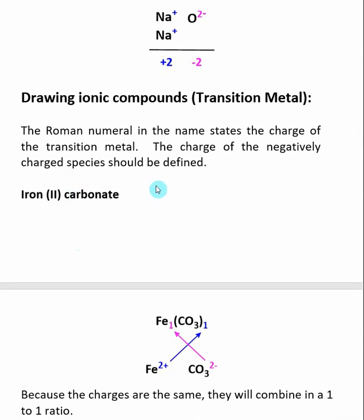If the first element named is a transition metal, I need to remember that the charge on the transition metal is stated in the name as a Roman numeral. Transition metals have a variable charge, so I need to find out what the charge is — fortunately, it is given in the name. The charge of the negatively charged species, the thing to the right, should be defined. It should be either an element or a polyatomic.